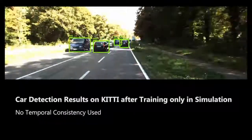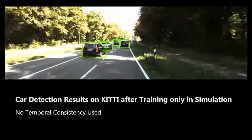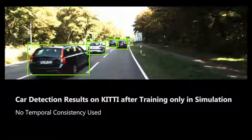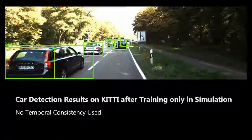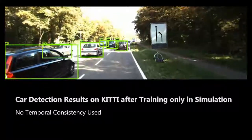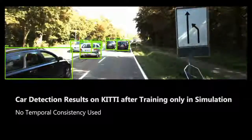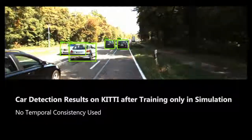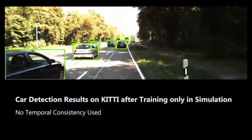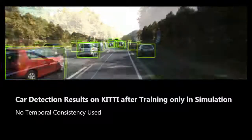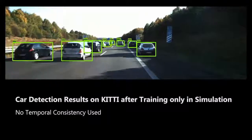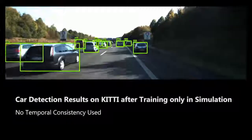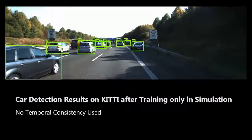Here we can see the results of running the network on KITTI videos. The network is trained using only synthetic data generated by structured domain randomization, and yet it consistently detects all cars in the scene with high confidence. This is remarkable given that the network has never seen a real image during training. Note that these detection results do not rely on any temporal consistency.